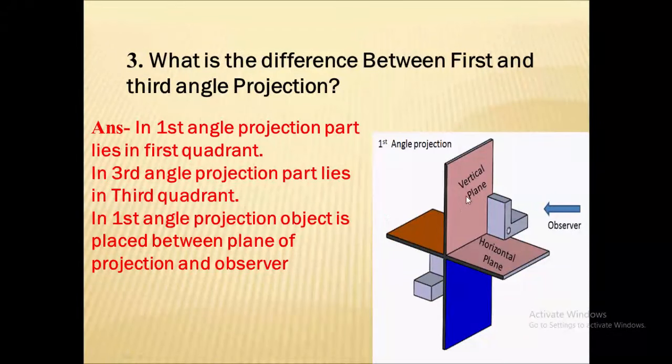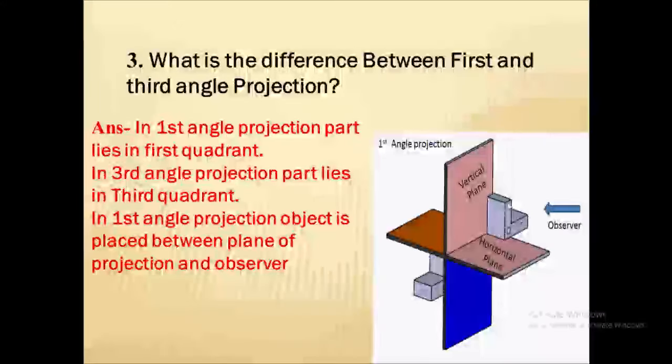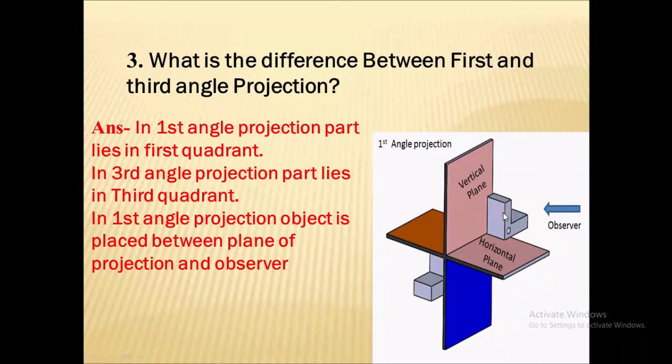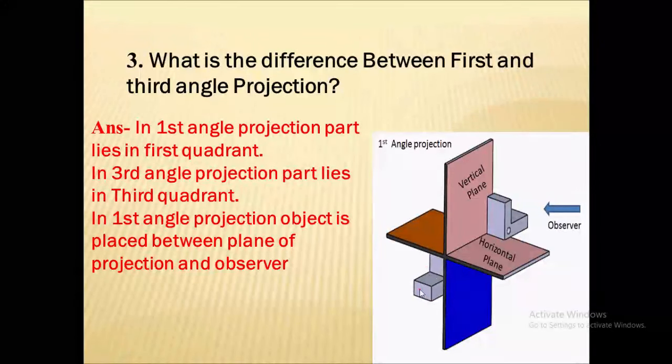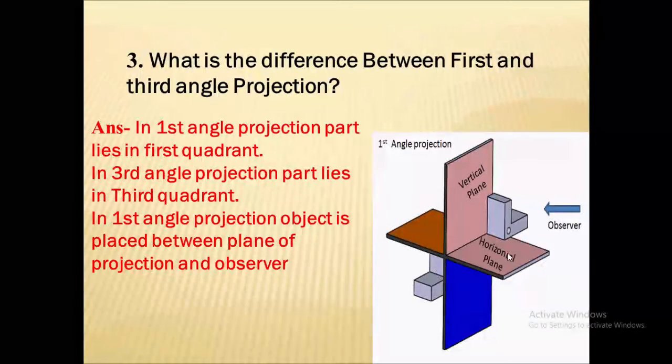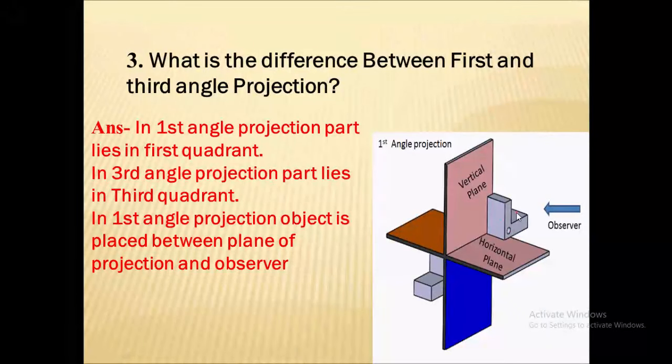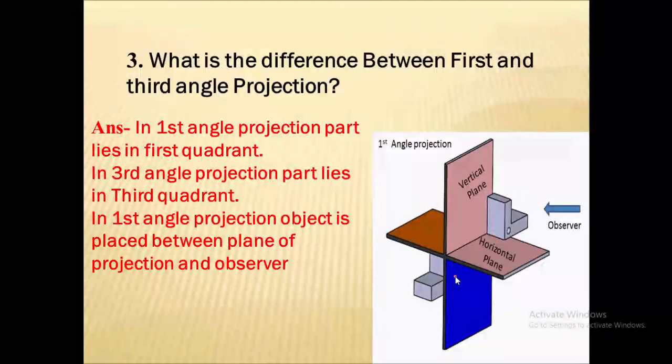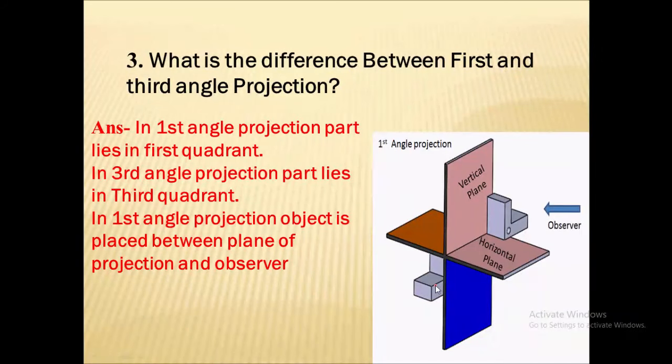In first angle projection the object is assumed to be placed in the first quadrant, while in third angle projection the object is assumed to be placed in the third quadrant. In first angle projection object is placed between the plane of projection and the observer, while in case of third angle projection the plane of projection is in between observer and the object.